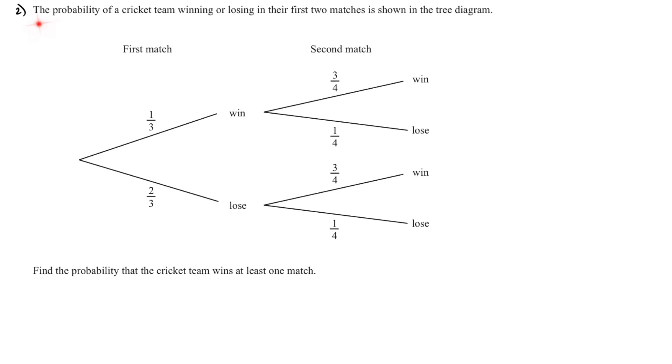The next question: the probability of a cricket team winning or losing in their first two matches is shown in the tree diagram. Winning the first match is 1 over 3 and losing is 2 over 3. All the probabilities are given to us and they want us to find the probability that the cricket team wins at least one match. This means it can win at least one match or more than one, so it can win both matches too.